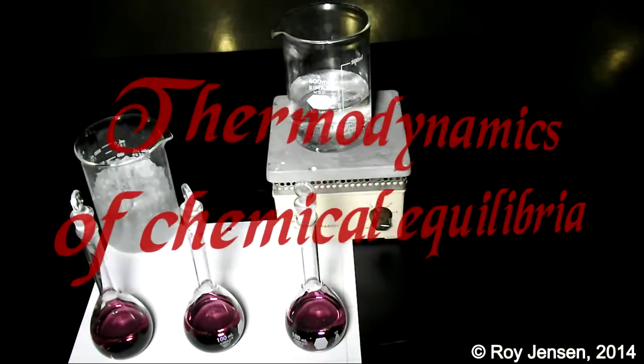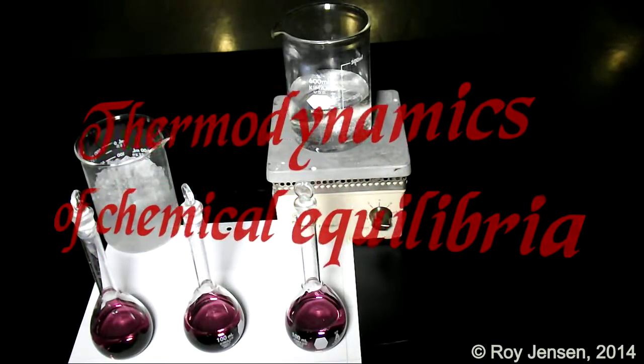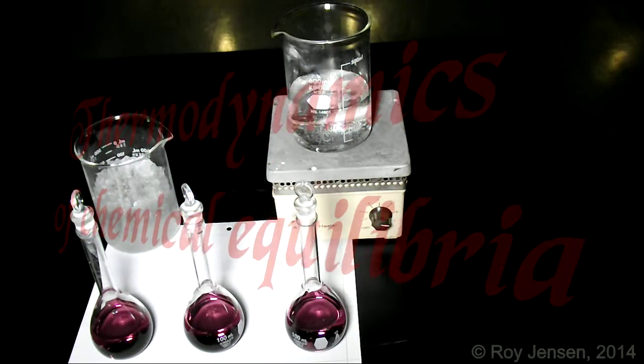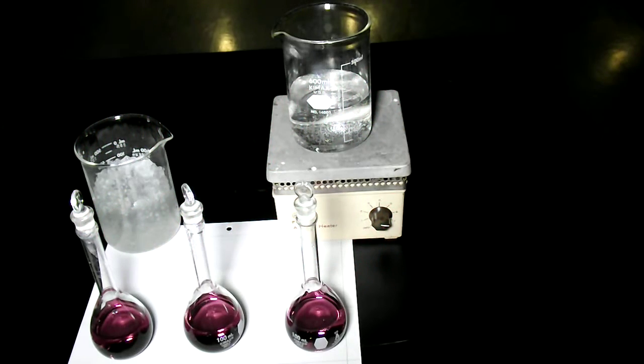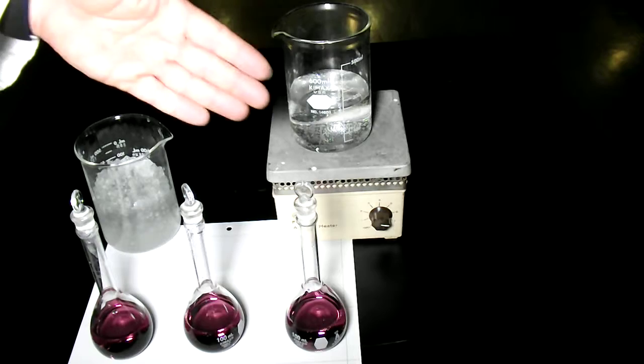So the equilibrium we have here, this equilibrium constant is between cobalt chloride, cobalt 2 chloride actually, and hexa-aquil cobalt. We'll look at the complex ions in a little bit, but this equilibrium constant is an example of one that changes as a function of temperature. So we have three